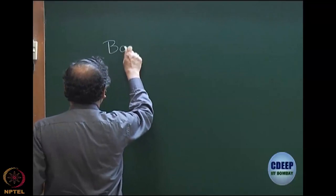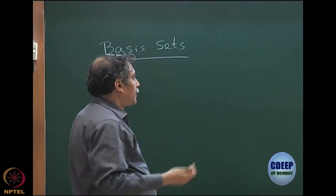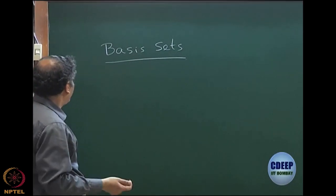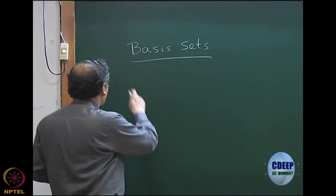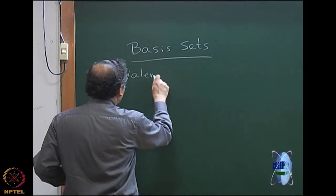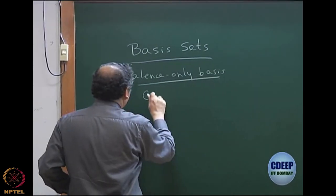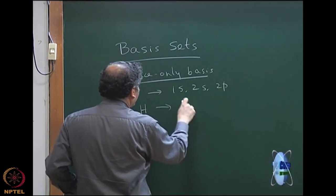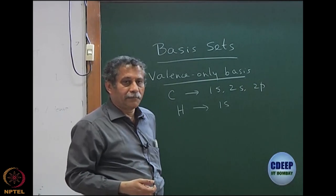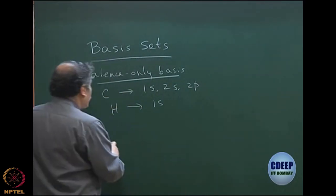We continue with basis sets today. As we said in the last class, we have to choose first the basis for the atomic orbitals. One of the bases that is very common is the valence-only basis, which essentially means for first-row atoms like carbon we have 1s, 2s, and 2p, and for hydrogen it is just 1s. These are typically Slater orbitals, which will be expanded in terms of Gaussians.